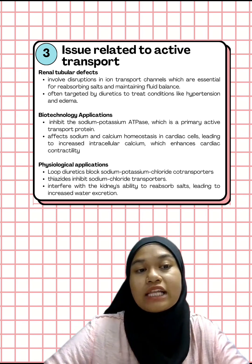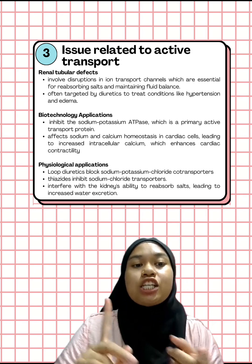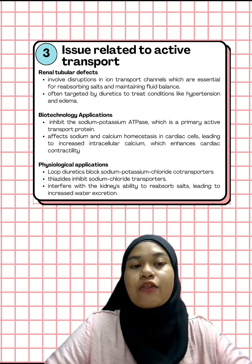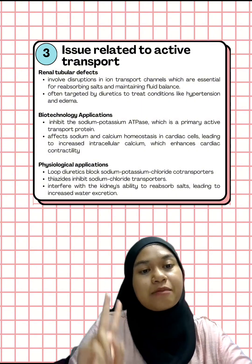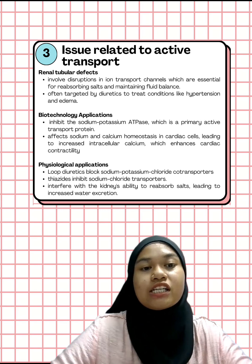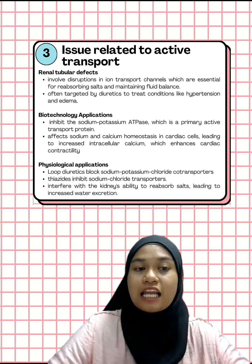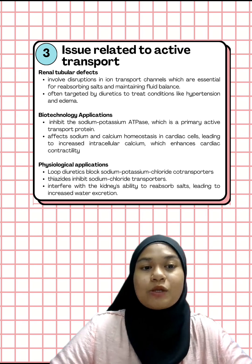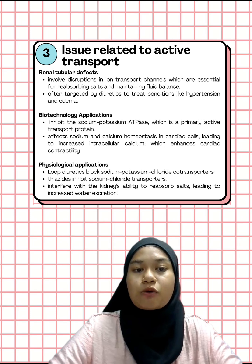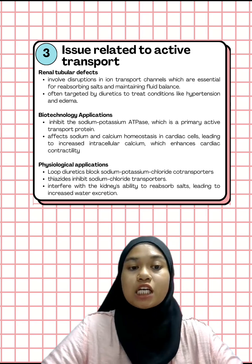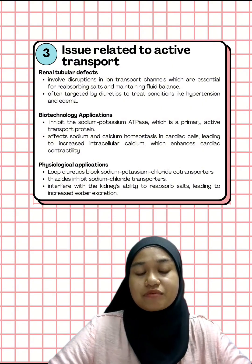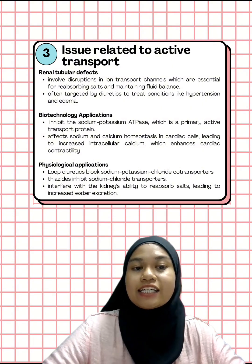Now I'm going to give you three health issues related to active transport: diuretics, cardiac glycosides, and renal tubular defects. There are two types of diuretic medications: loop diuretics and thiazide. These medications target the anti-transport system in the kidney. Loop diuretics block the sodium-potassium-chloride co-transporter, while thiazide inhibits the sodium-chloride transporter. Both mechanisms interfere with the kidney's ability to reabsorb salt, leading to increased water excretion.